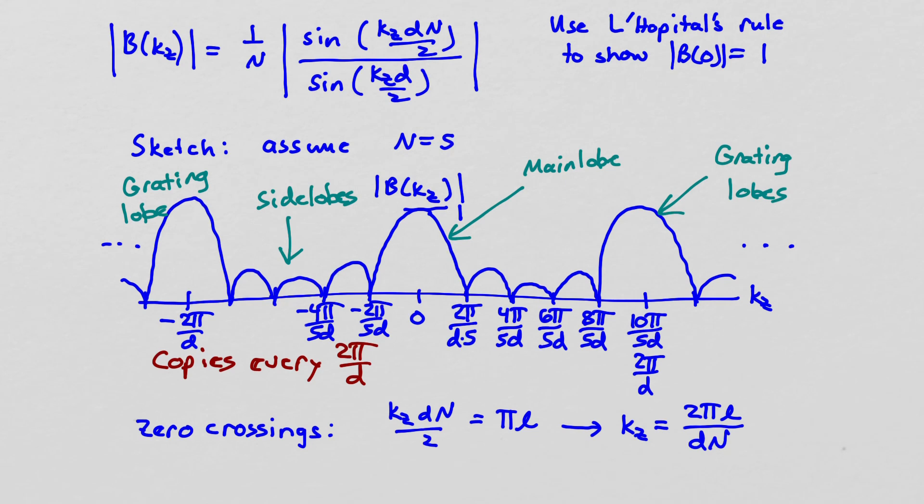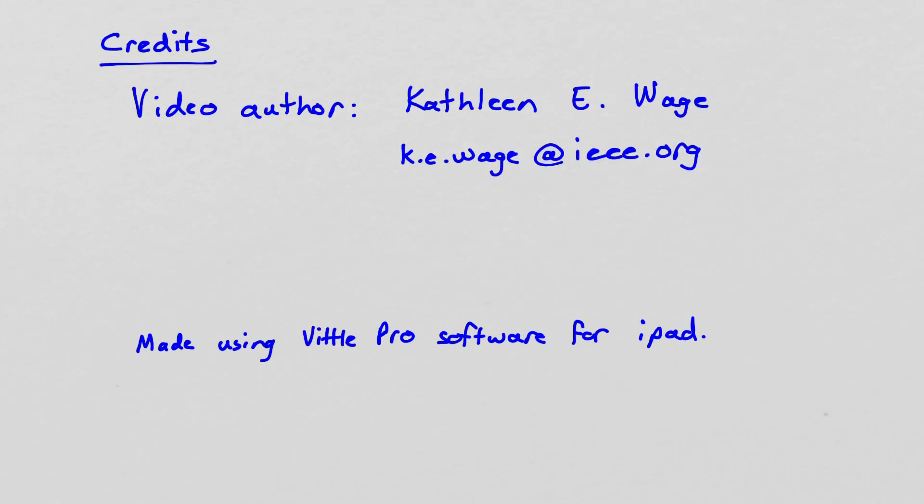Now you know how to derive the beam pattern for a uniformly weighted conventional line array and how to plot the magnitude of that beam pattern, including labeling all the key points, including these zero crossings and where the peaks and the grating lobes occur. So that concludes this video. You can take a look at the YouTube site for other videos related to conventional beamformers. Thanks for watching.